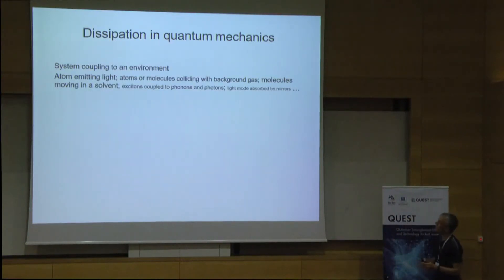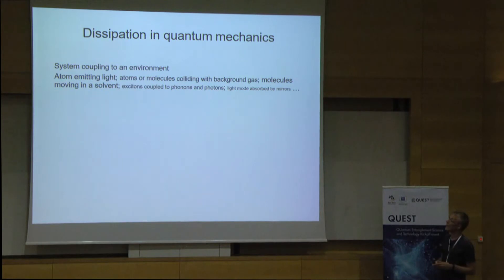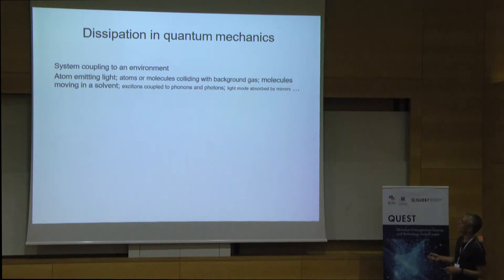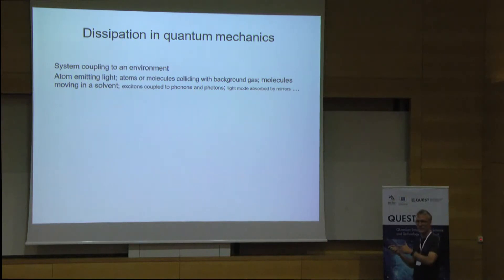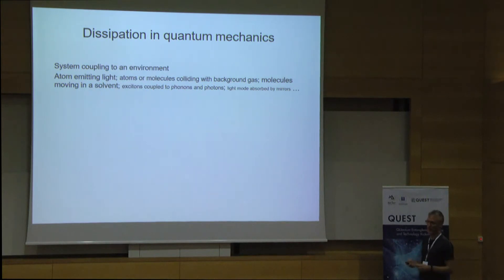In quantum mechanics, we are talking typically about a system that's coupled to its environment. It could be an atom that emits light — radiative emission decay of excited states — or atoms or molecules that collide with the background gas, or molecules moving in a solvent, excitons coupled to phonons and photons, or light modes absorbed by mirrors. All physical systems we deal with have some sort of relaxation mechanisms, and you can typically name it from your own expert field.